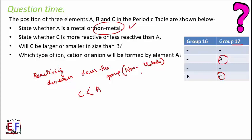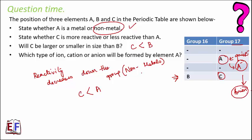Will C be larger or smaller in size than B? B and C belong to the same period, and along a period, atomic size decreases as we move from left to right. Therefore C will be smaller in size than B. Which type of ion — cation or anion — will be formed by element A? Element A is a non-metal and therefore tends to gain electrons, becoming negatively charged. A negatively charged ion is an anion.